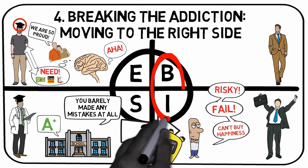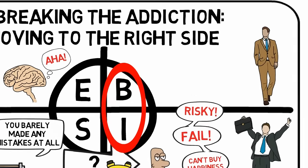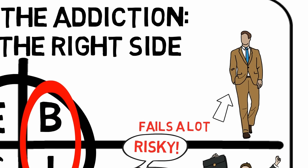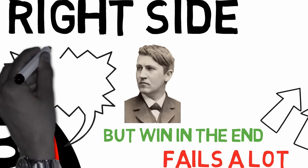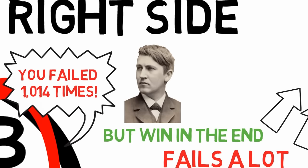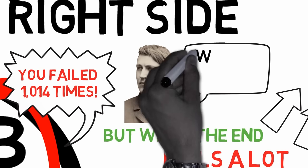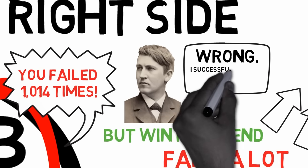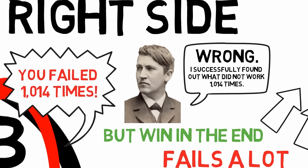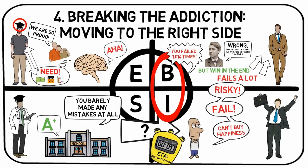In the B and I quadrants, you must act in the complete opposite way. People who take action will also make the most mistakes, but in the long run, these people will learn more and achieve more as business owners and investors. Thomas Edison was criticized for making 1,014 mistakes before creating the electric light bulb. In response, he said: I did not fail 1,014 times — I successfully found out what did not work 1,014 times. The transition won't be easy, but a great start is to surround yourself with people who have made the journey before and learn from those already successful in the B and I quadrants.